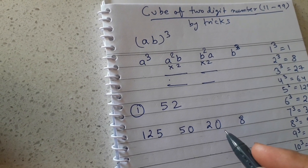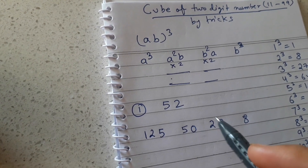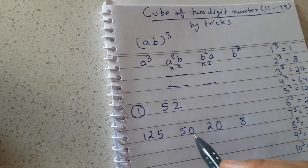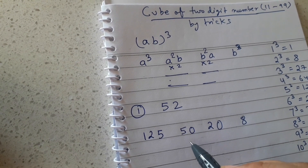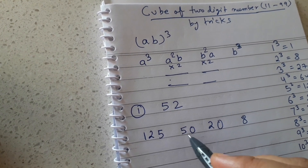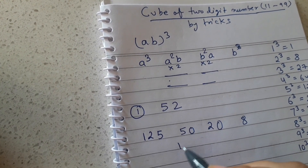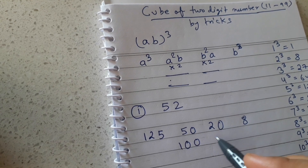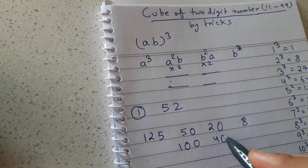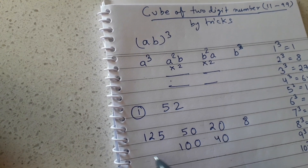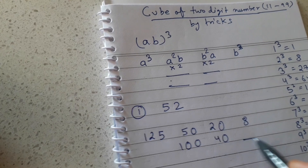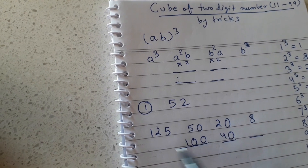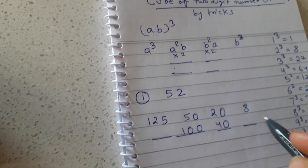The next step is to multiply the middle terms by 2: 50 × 2 = 100, and 20 × 2 = 40. Then the third step is to add these values together.